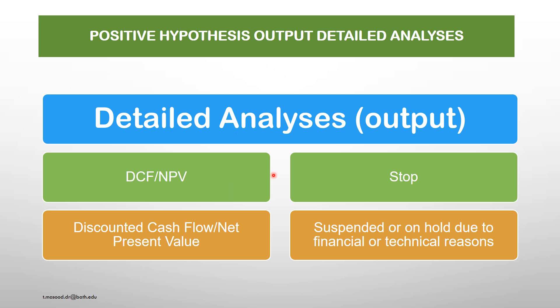In my next slide, the detailed analysis — that is the output from the positive hypothesis. It has two streams: one is the DCF/NPV stream and the second is the stop stream. In the DCF/NPV stream: discounted cash flow or net present value of the project if being implemented. In the second stream: suspend or put on hold due to financial or technical reasons. If the project has value, it must proceed. If it did not deliver as per assignment, we must suspend or stop the project activities.